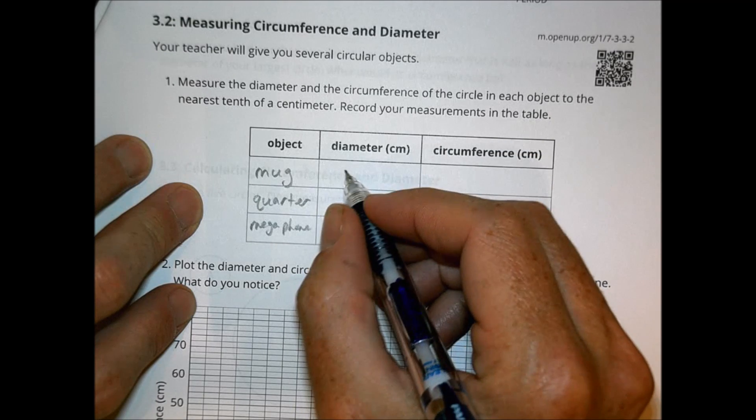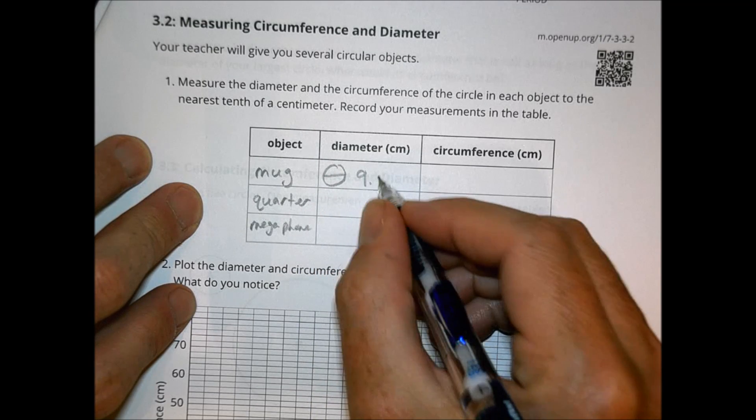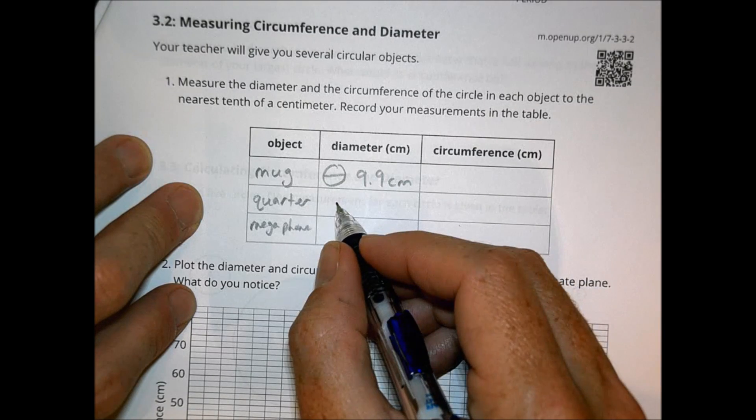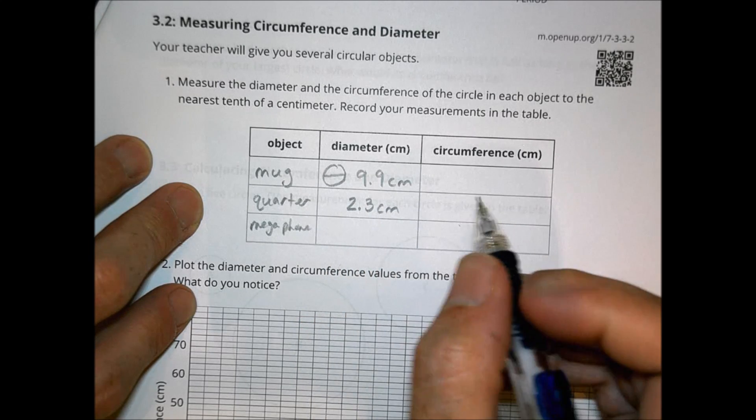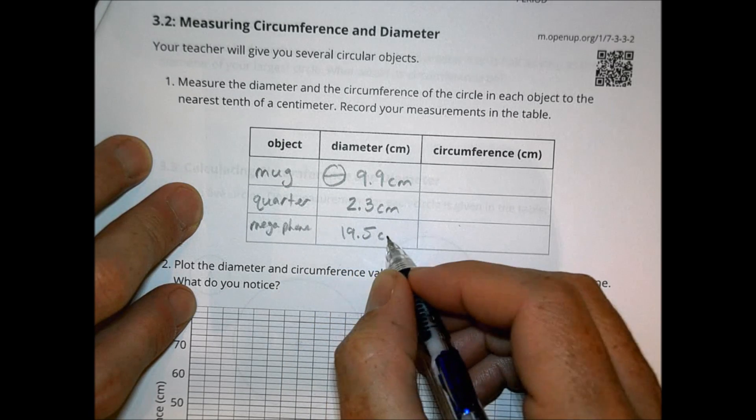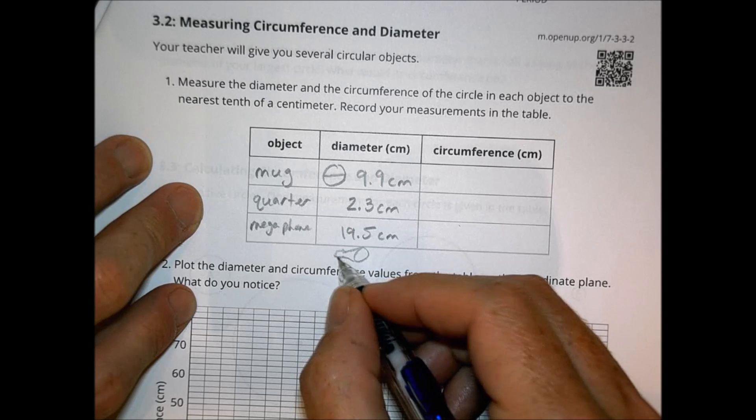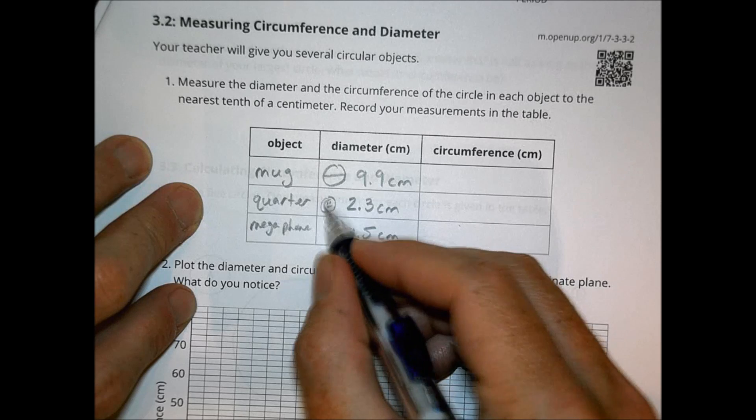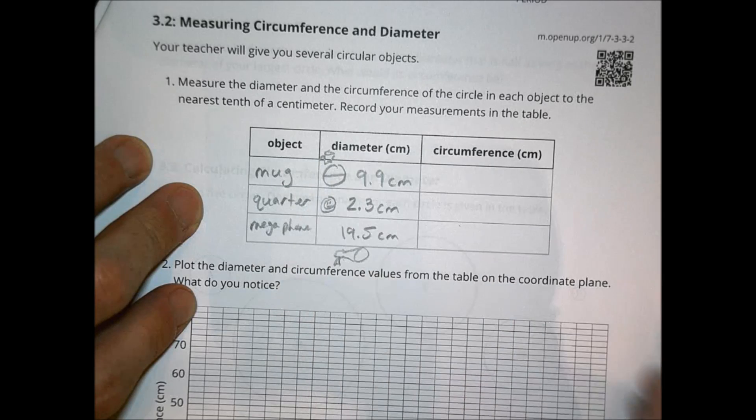In activity number two, we were measuring circumference and diameter. You were given several objects by your teacher to measure the diameter and then figure out the circumference of that object. For my purpose here, I used a mug, coffee mug, and I used a quarter and I used my megaphone that we use in case there's an emergency at school. There's my megaphone that I used, and my quarter with a happy person in the middle because 25 cents and my coffee mug like so.